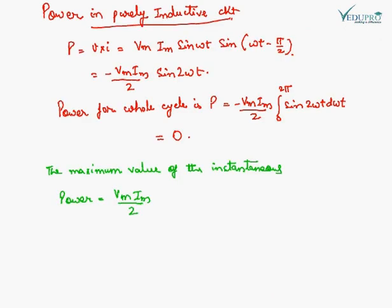For power in a purely inductive circuit, power is V into I. However, the power for the whole cycle is zero. The maximum instantaneous power is VM IM upon 2.